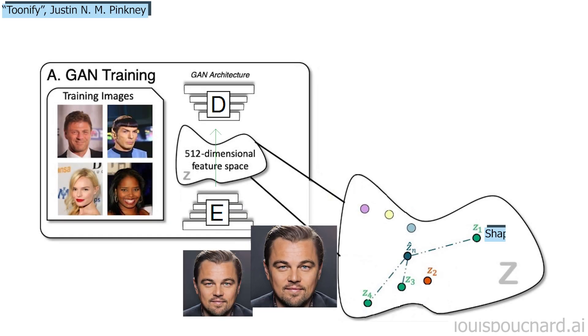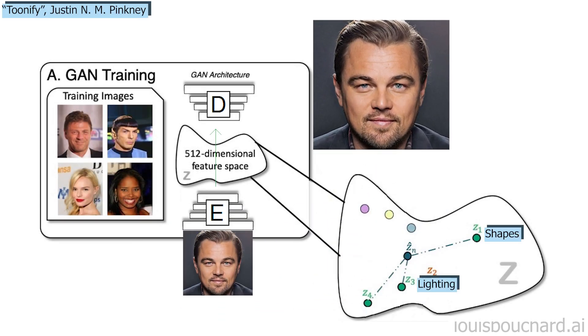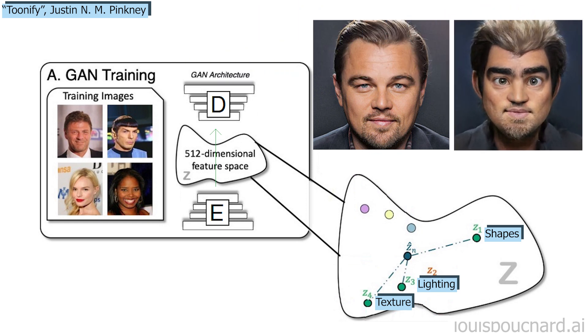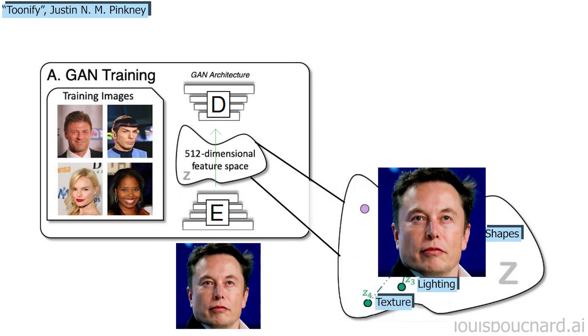StyleGAN is Nvidia's state-of-the-art GAN architecture for image synthesis or image generation. I made a lot of videos covering it in various applications that you should definitely watch if you are not familiar with it.